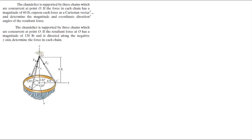For more videos, visit ForTheSakeOfEducation.com. Alright guys, now we're going to do these two problems. The chandelier is supported by three chains which are concurrent at point O. If the force in each chain has a magnitude of 60 pounds, express each force as a Cartesian vector and find the magnitude and coordinate direction angles of the resultant force.